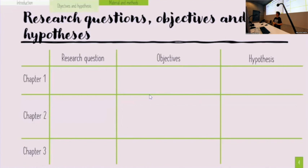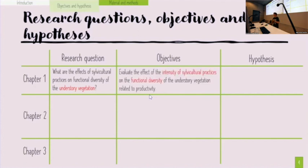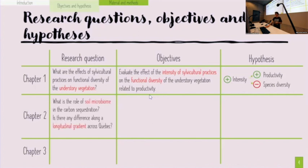In the first chapter, I will focus on the heroes of carbon sequestration — plants — specifically understory vegetation, since other students on the project are focusing on trees, soil, and other components. The main objective is to evaluate the effect of the intensity of silvicultural practices on functional diversity related to productivity. The main hypothesis is that when intensity increases, we will have an increase in productivity but a decrease of species diversity.